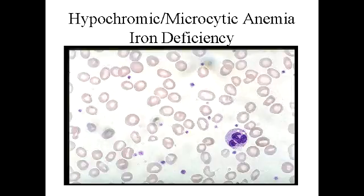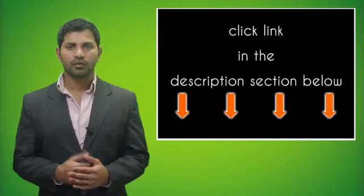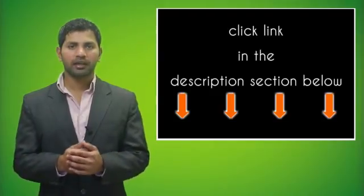What is thalassemia? Thalassemia is a blood disorder passed down through families — meaning it's inherited — in which the body makes an abnormal form of hemoglobin. Because of this abnormal hemoglobin, there will be excessive destruction of red blood cells, and this leads to anemia.